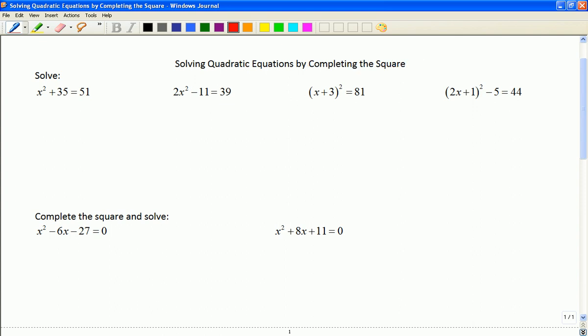So to get you warmed up and thinking about how this could work, the goal is going to be the same when we do this, and that's to isolate the x squared term. So in this first equation, it's not going to work because I've got x squared plus 35. So what I'm going to do is I'm going to move the 35 to the other side.